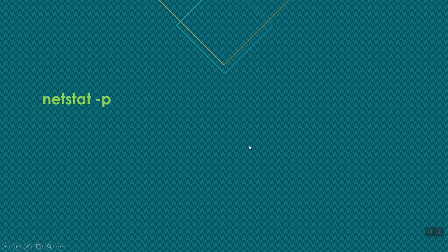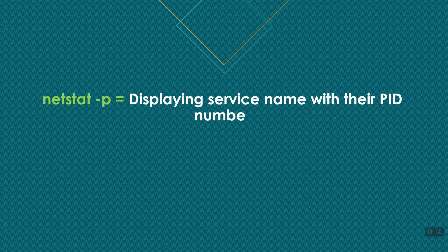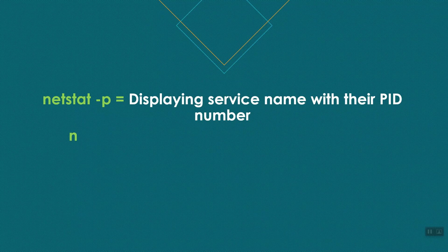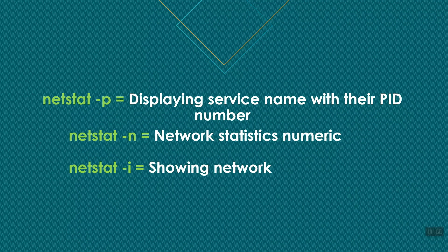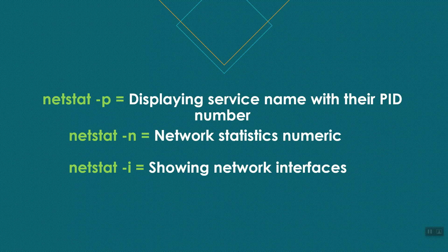netstat -p displays the service name with PID number. netstat -n shows network statistics in numeric format — we can see port numbers separately. netstat -i shows network interfaces and their statistics.